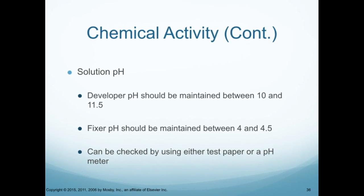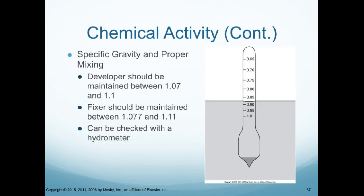The solution pH with chemical activity: developer pH should be maintained between 10 and 11.5. Fixer pH should be maintained between 4 and 4.5 — very different values. These can be checked using either test paper or a pH meter. For specific gravity and proper mixing: the developer should be maintained between 1.07 and 1.1, and the fixer between 1.07 and 1.11. This can be checked with a hydrometer.